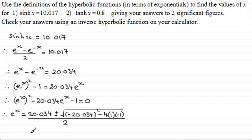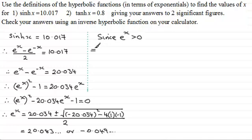So if we work this out on the calculator you find that e to the x comes out to be, if we take the positive option 20.083 and so on. And if you take the negative option e to the power x comes out as minus 0.049 and so on. Now e to the x cannot be a negative value. It's undefined. So since e to the power x is always a value greater than 0.